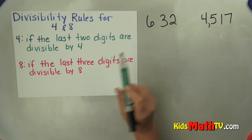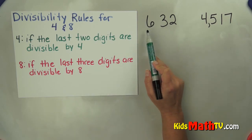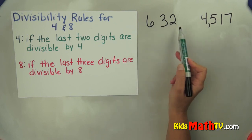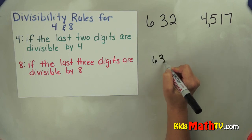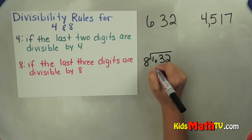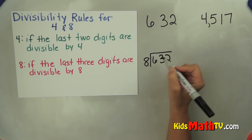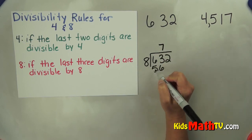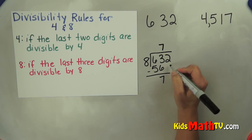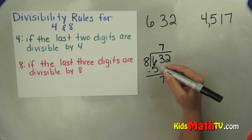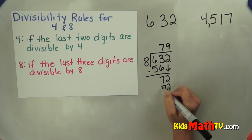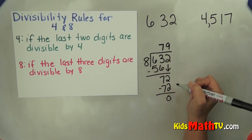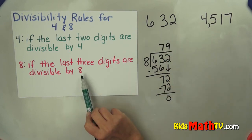Let's try 8. Is 632 divisible by 8? We have to look at the last 3 digits, which is the entire number. So we simply have to do the math: 632 divided by 8. 8 goes into 63 seven times — that's 56. Subtract and you get 7. Bring down the 2. 8 divides into 72 evenly, which is 9. So since this divides evenly, 632 is divisible by 8.